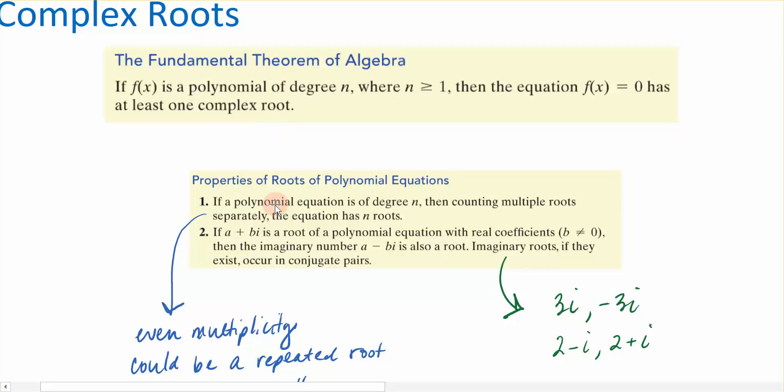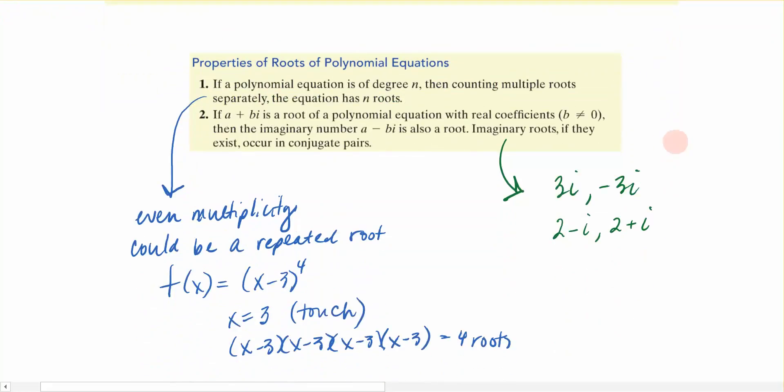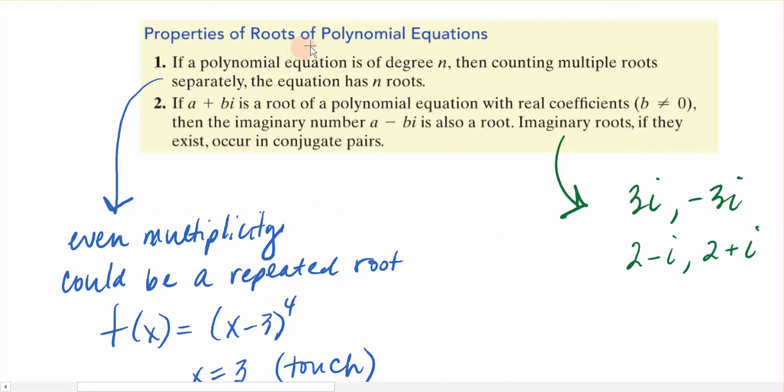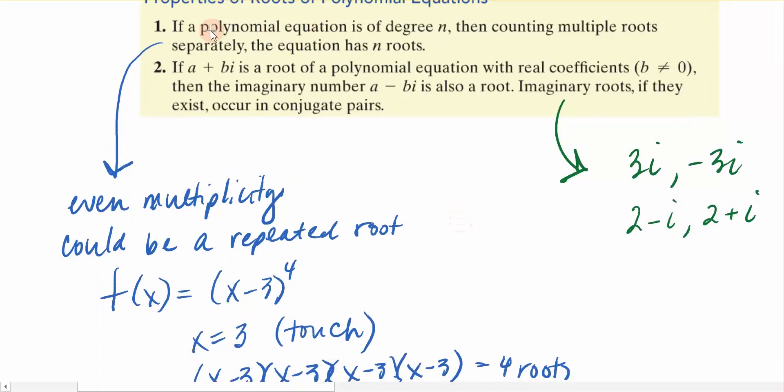How do we find those complex roots? Let's go back and talk one more time about some properties of the roots of polynomial equations. This first property we've really dealt with already in a previous section. It says that if I have a polynomial equation of degree n, then counting the multiple roots separately, the equation has n roots.